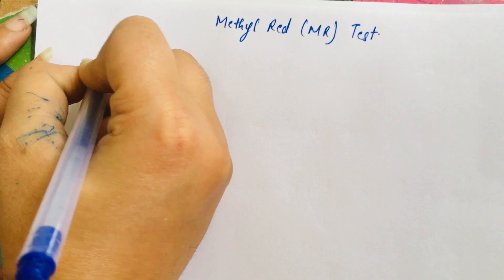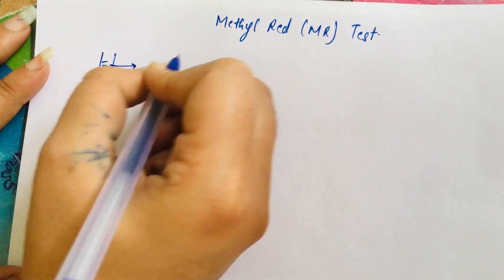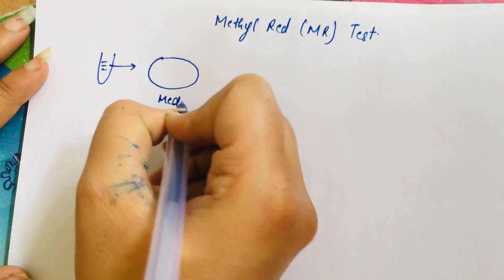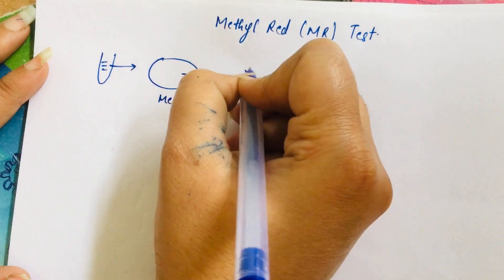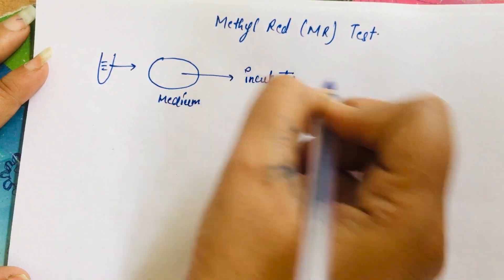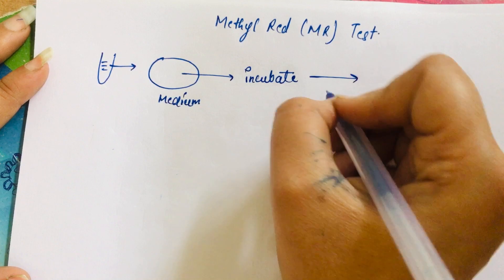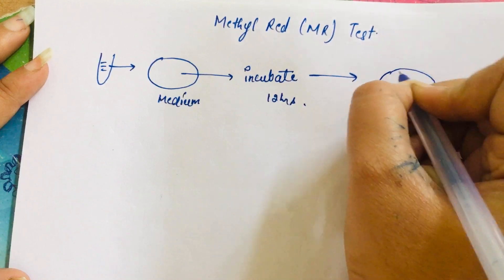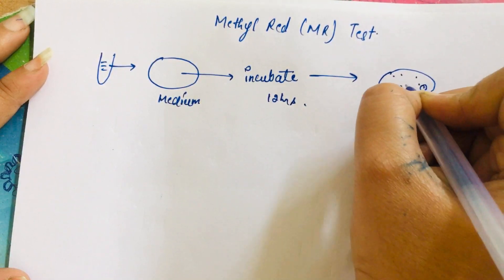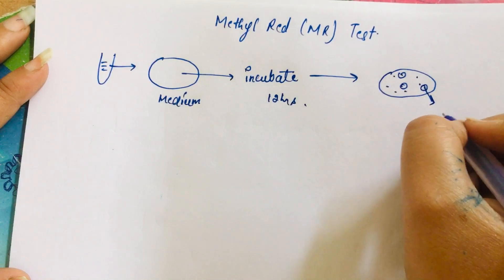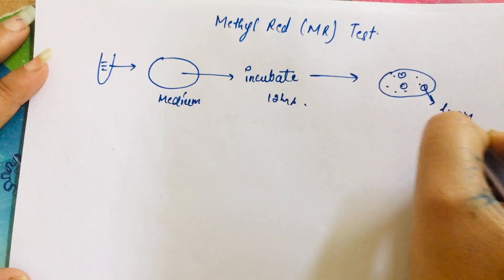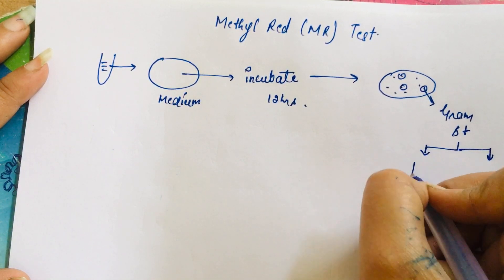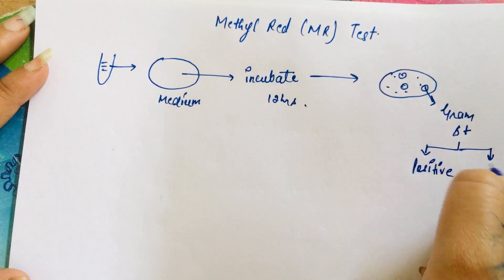Once we get a specimen in the laboratory, we inoculate it onto a suitable medium — a culture plate — and then incubate it. After incubation of 12 hours, we find suitable colonies on the petri plate, mark them, perform a gram stain, and from that we can predict whether our bacteria is gram positive or gram negative.